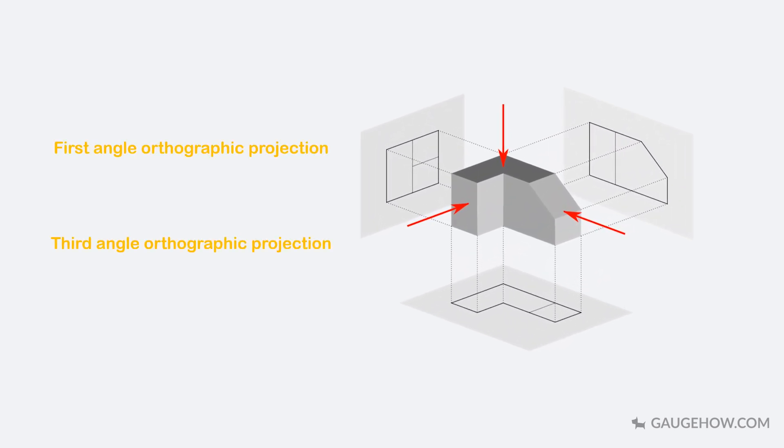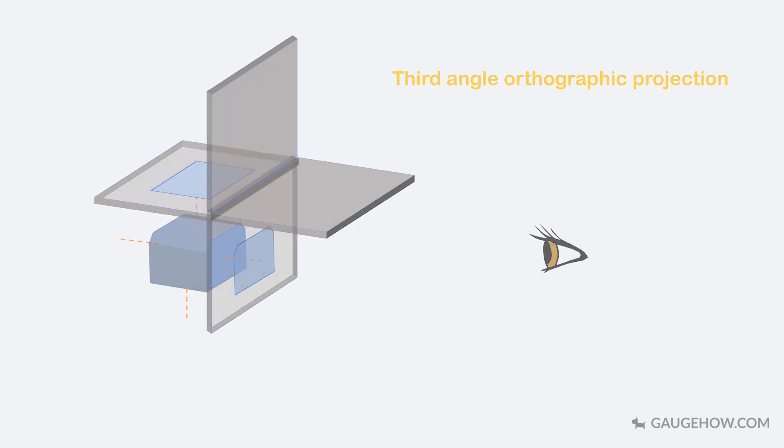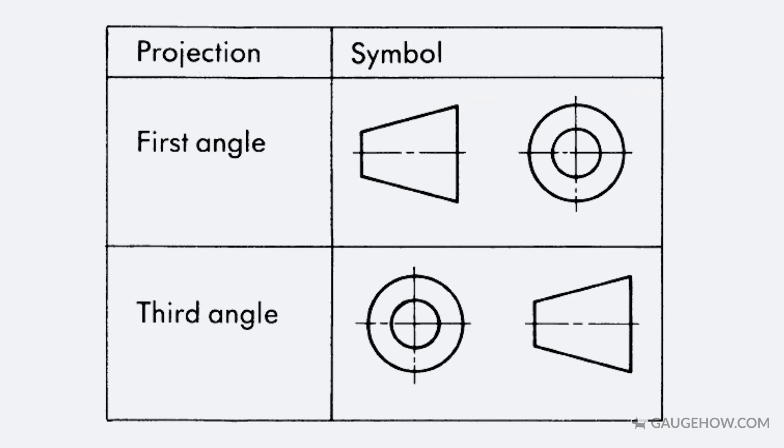Engineering drawing is usually presented in first angle orthography, projection or third angle orthographic projection. These orthographic projections can be further explained as follows. A three-dimensional space can be divided into four sections. The observer always looks from the right side. In first angle projection, the object is kept in the first quadrant so that the object is between the observer and the plane of projection. Whereas in third angle projection, the object is kept in the third quadrant so that the plane of projection is between the observer and the object. These are the symbols by which first and third angle projections are represented.